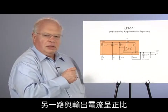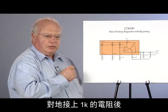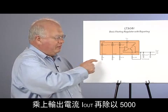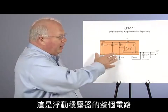The other current source is proportional to our output current, and we get I out over 5000 through the 1K resistor to ground.